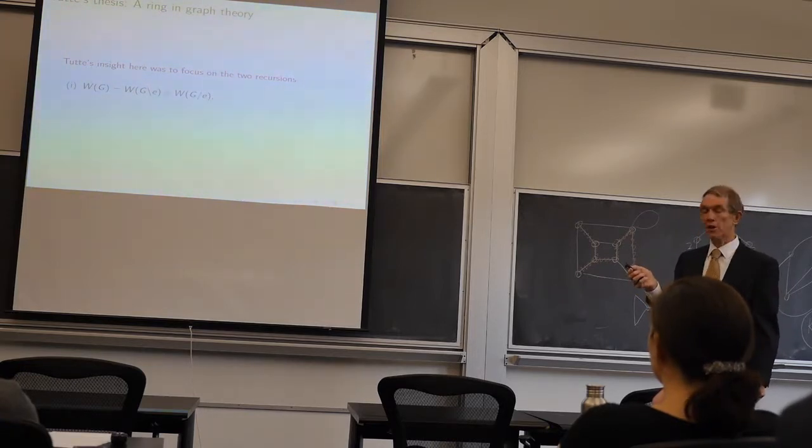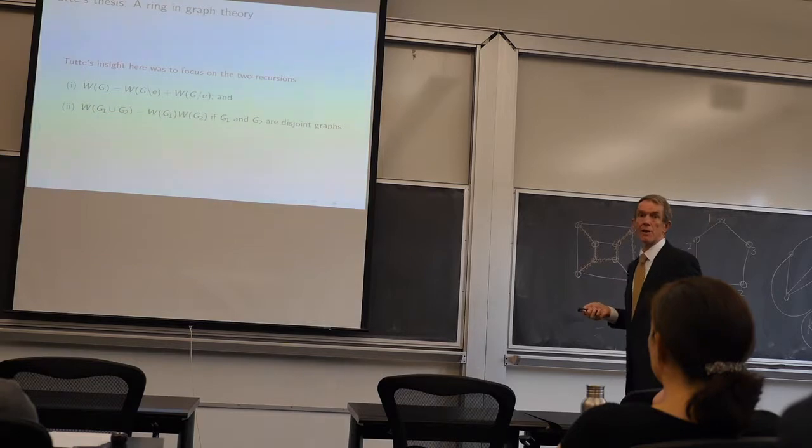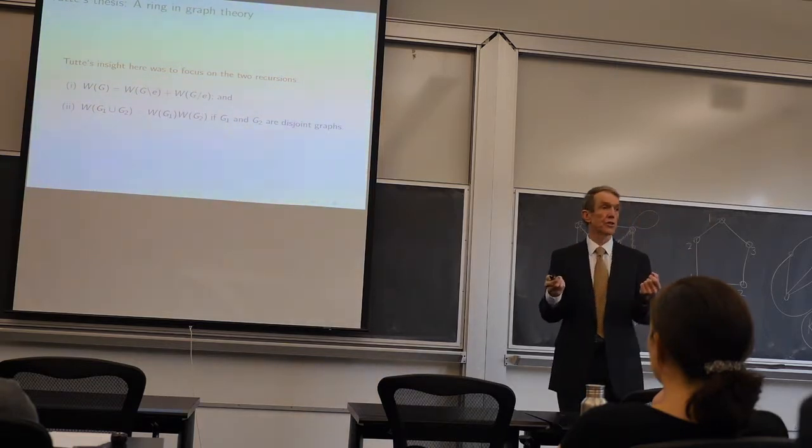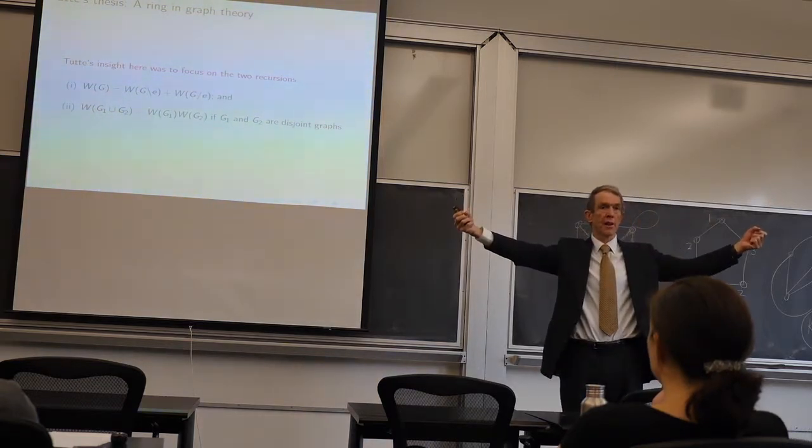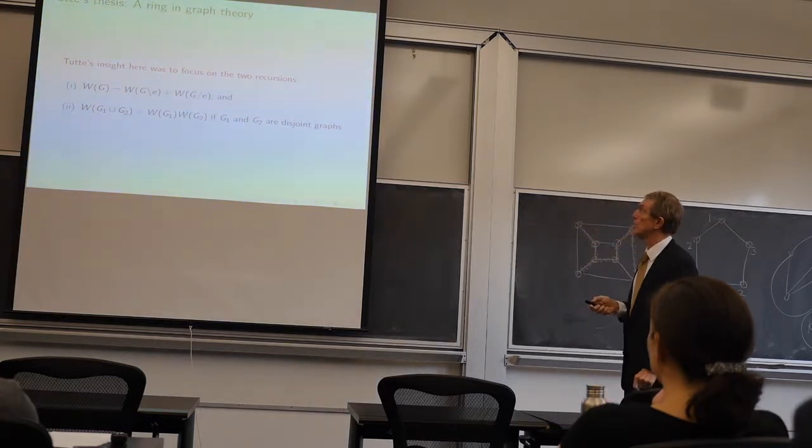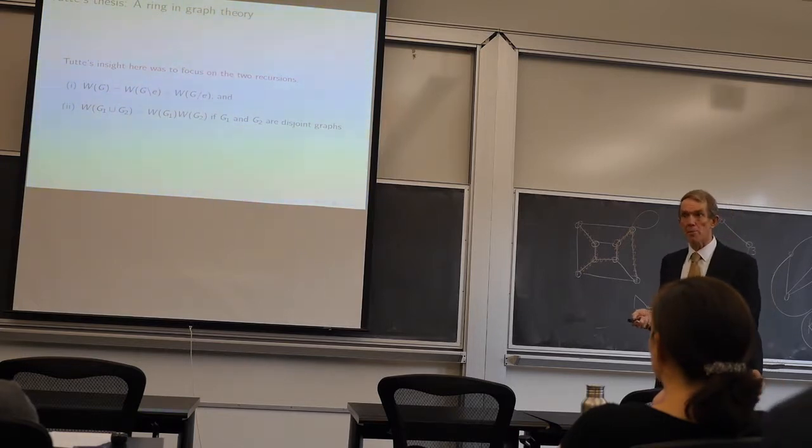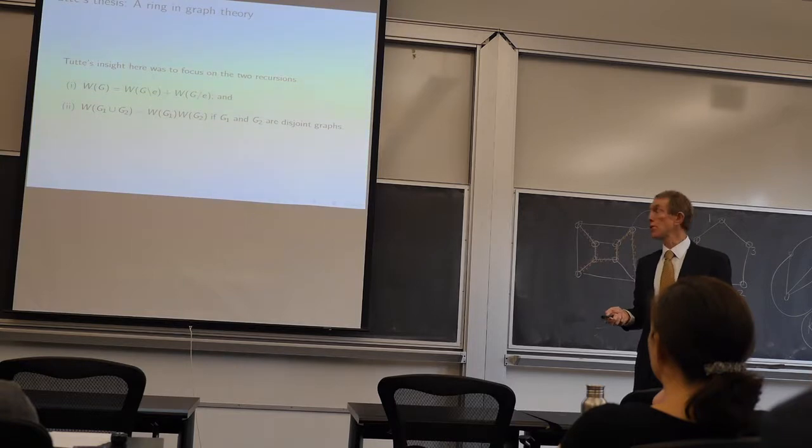We're looking at the colorings in G delete E. Either U and V get different colors, in which case I've got a coloring of G, or they get the same color, in which case I can contract them. And I get a coloring there. I went a bit too fast on that, but that deletion-contraction recursion is absolutely fundamental to stuff that Tutte does. He focused on these two recursions, this deletion-contraction one, and another one which is a product recursion.